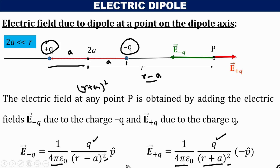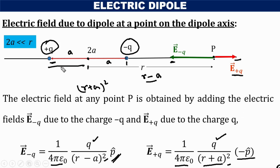Looking at the green arrow, its direction is the same as that of the dipole moment — from negative to positive charge. That is why the direction of E minus Q is represented as p cap. E plus Q is opposite to the dipole moment direction, that is why it carries a negative sign. We must always remember: the field due to the negative charge is in the positive p cap direction, while the field due to the positive charge is in the negative p cap direction.